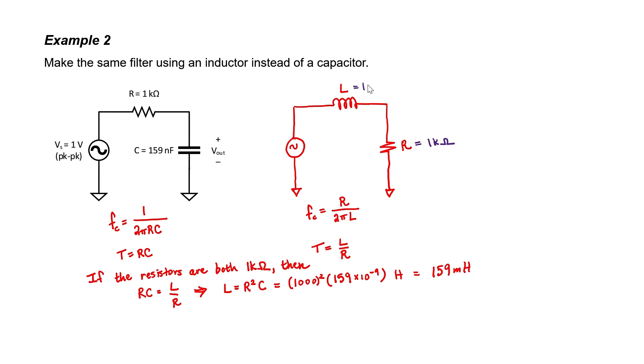I can then conclude that if I make a filter with a 1 kiloohm resistor and a 159 millihenry inductor, the filter would behave exactly the same way as my filter with a 1 kiloohm resistor and 159 nanofarad capacitor.